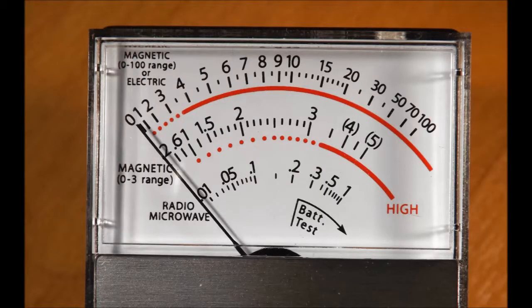The meter has a large display with needle gauge. Use the top scale when set to magnetic 0 to 100 or electric field. Use the middle scale when set to magnetic 0 to 3. Use the bottom scale for RF measurements.